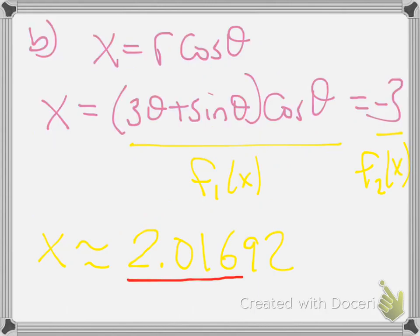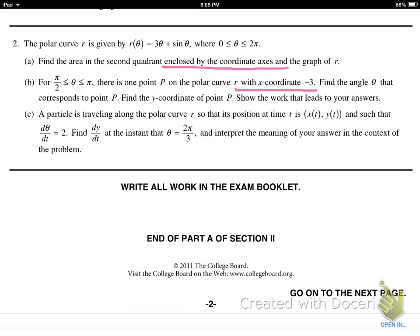Let's get to the last part. Part C. By the way, part B was also 3 points. A particle is traveling along the polar curve R so that its position at time t is (x(t), y(t)) such that dθ/dt = 2. Find dy/dt at the instant θ = 2π/3 and interpret the meaning of your answer in the context of the problem. The particle is traveling around the curve and we know dθ/dt. We want to know dy/dt.